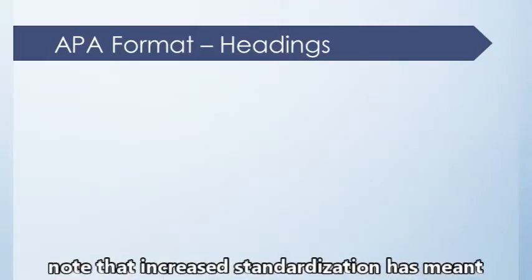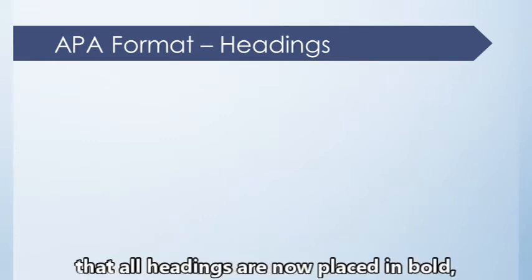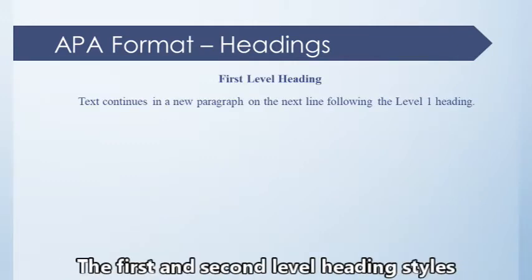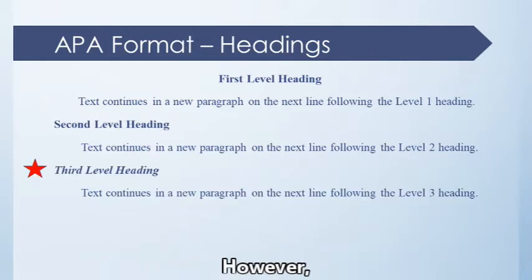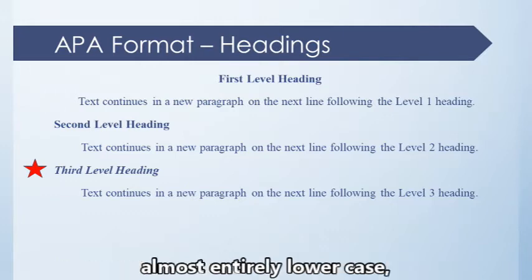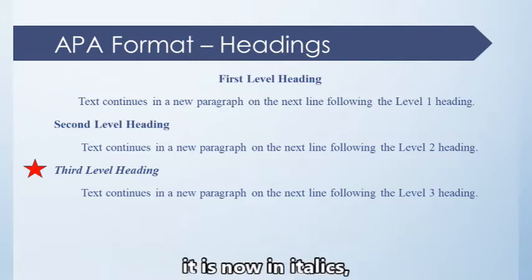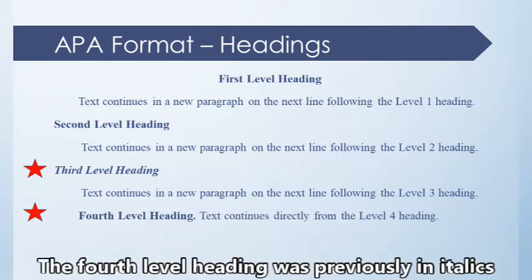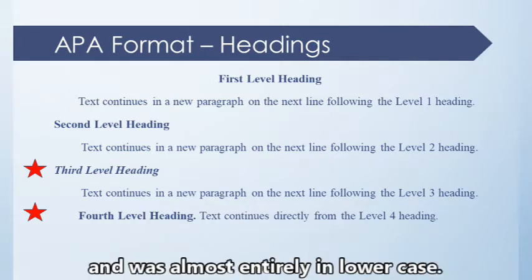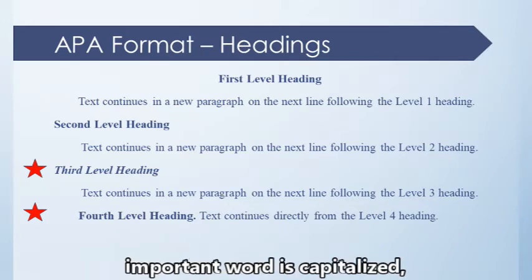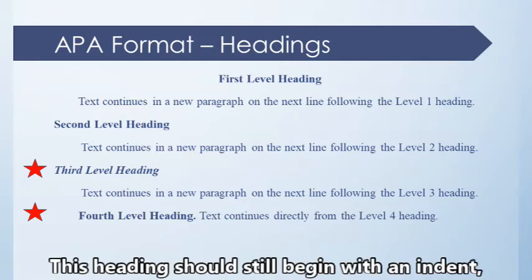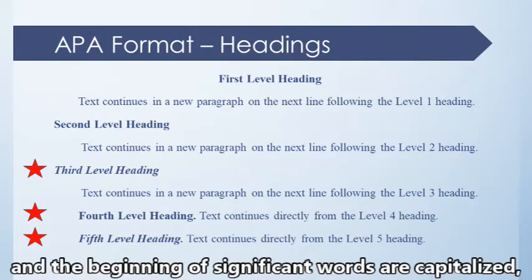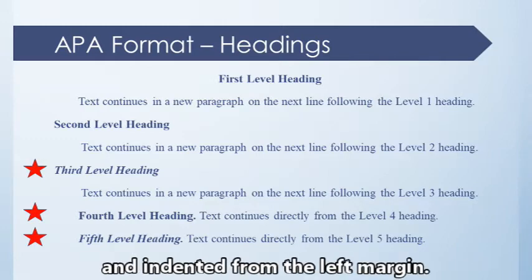If your paper requires headings, note that increased standardization has meant that all headings are now placed in bold, and the first letter of each important word is now capitalized in every level of heading. The first and second level heading styles continue unchanged. However, the third level heading is now in italics, flush with the left margin, with the first letter of each important word capitalized. The fourth level heading now has the first letter of each important word capitalized with no italics, and should still begin with an indent. Finally, the fifth level heading is now in bold, italics, and indented, with the beginning of significant words capitalized.